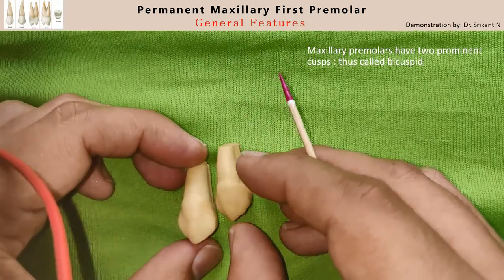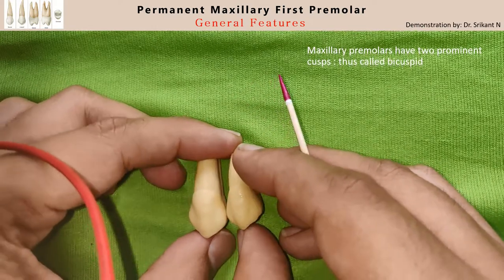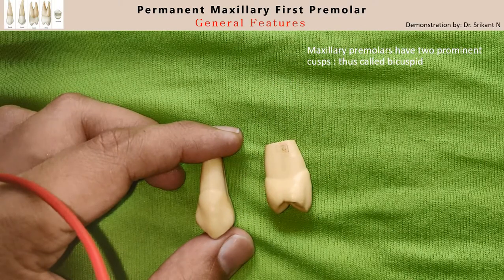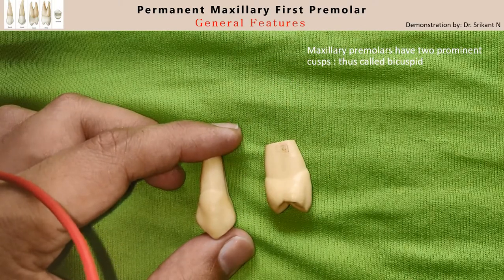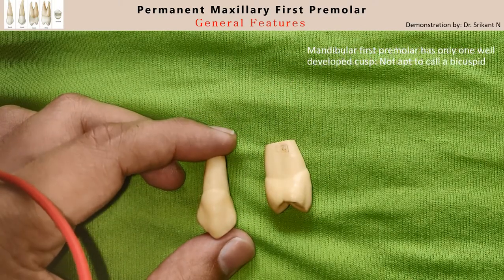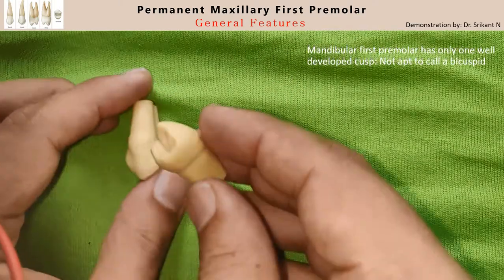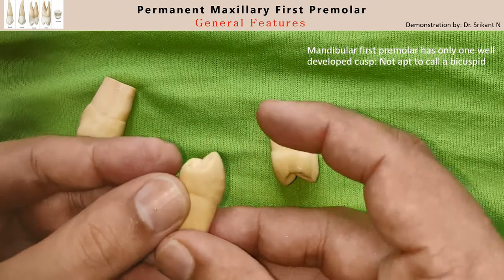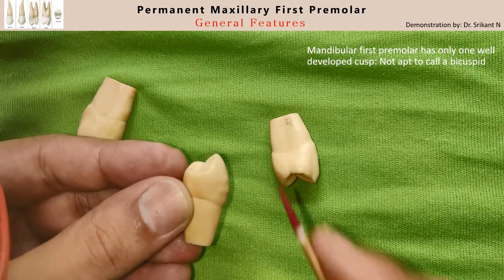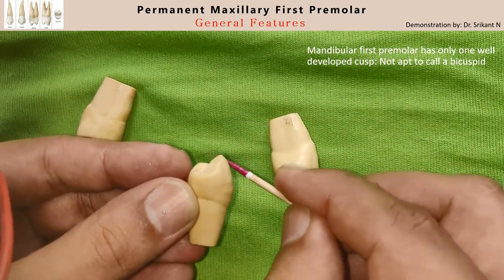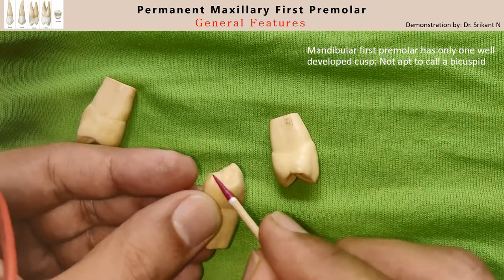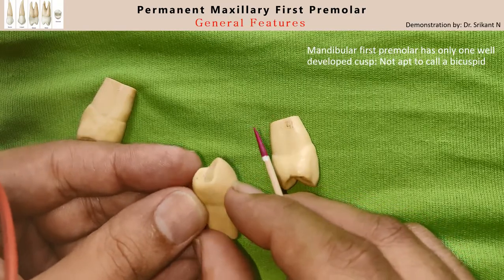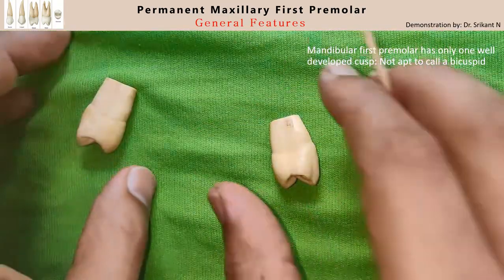That is one of the reasons why these teeth were called bicuspids. They are not true bicuspids, because if you see a mandibular premolar, it has a prominent buccal cusp, however the lingual cusp is less developed.